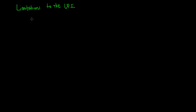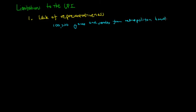For the CPI, there are four major limitations that may hinder the reliability of the figure as a measure of inflation. Firstly we have the lack of representativeness. We know that the CPI chooses 100,000 goods and services from metropolitan households to calculate the consumer price index.